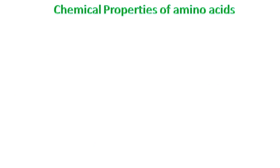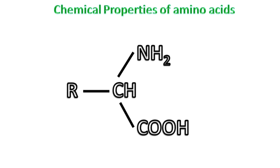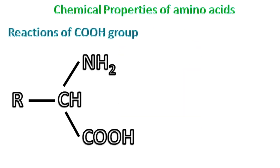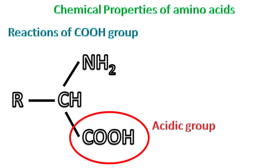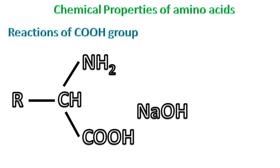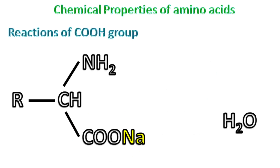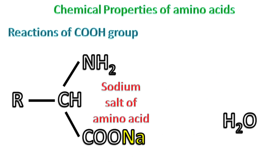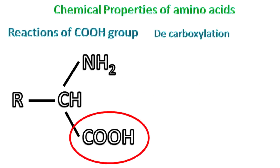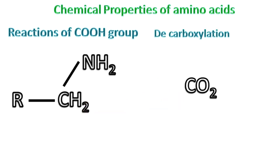Now let's talk about the chemical properties of amino acids. Chemical properties of amino acids are due to the presence of the amino group and the carboxyl group. The carboxyl group of an amino acid can react with sodium hydroxide to form the respective salt, while decarboxylation of the carboxyl group releases CO2 and results in the formation of amines.